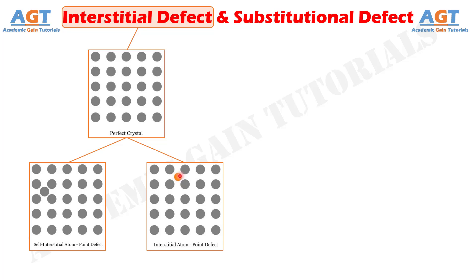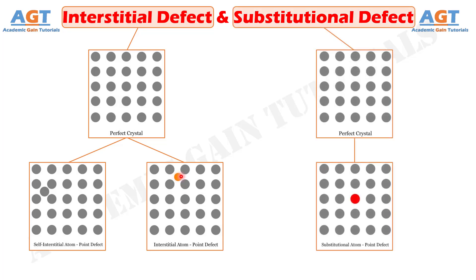On the other hand, substitutional defect occurs when the original atom in the lattice site of a crystalline solid is replaced by a different type of atom. Unlike interstitial defect, the foreign atom should occupy the lattice site only and not the interstitial position, as depicted in this figure.